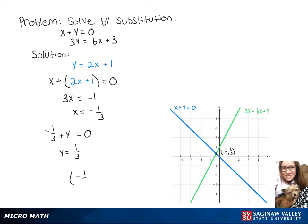So our solution to this is negative 1 third, 1 third, which as you can see on our graph is where our lines intersect.